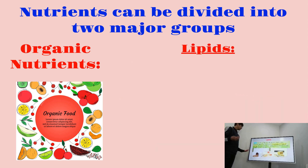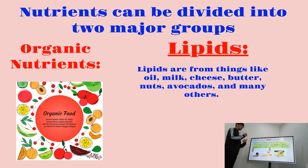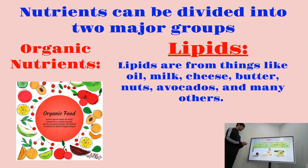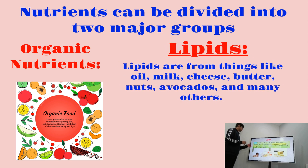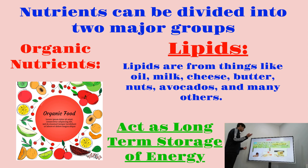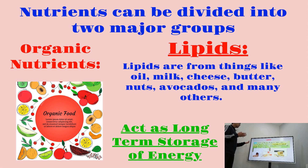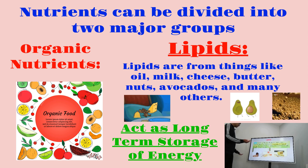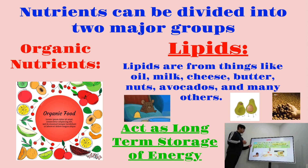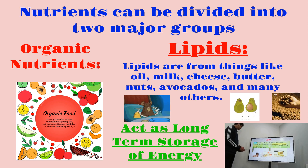Next, what are lipids? Lipids come from things like oil, milk, cheese, butter, nuts, avocados, and many others. Lipids act as a long-term storage of energy, and we also use lipids in making cell membranes as well as other useful chemicals.